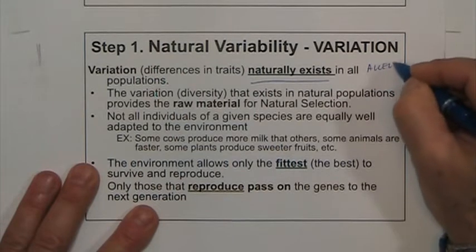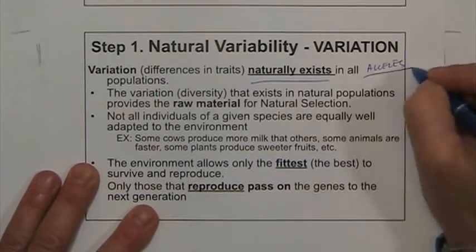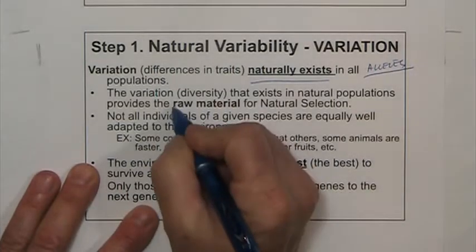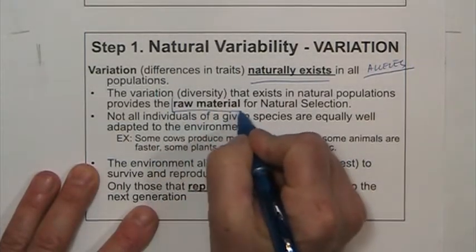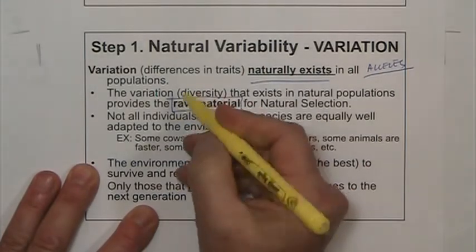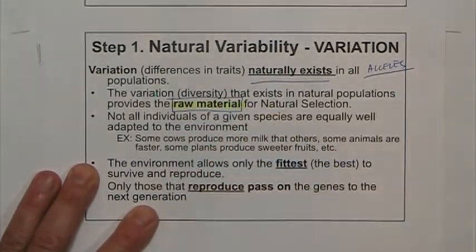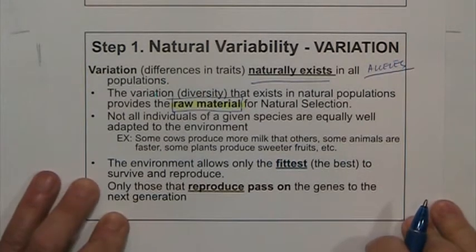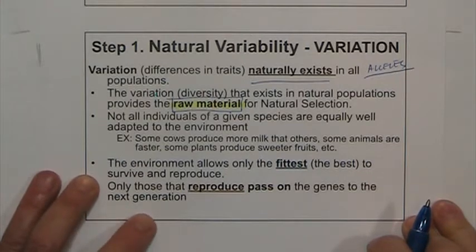Remember that most traits have alleles that make them different. This variation is what's going to be the raw material for natural selection. You have a variety of things and natural selection — basically your environment — is going to be the one that decides which ones can make it and which ones cannot.